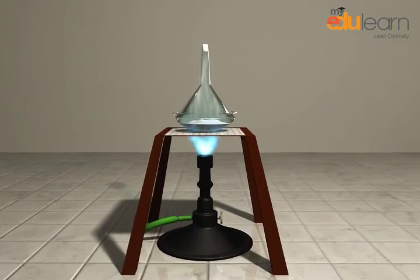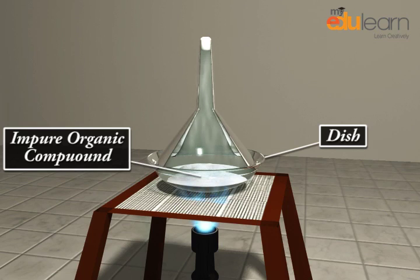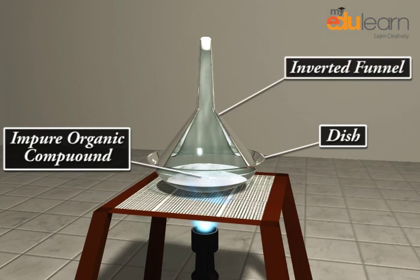The impure organic compound is heated in a dish covered with perforated asbestos sheet over which an inverted funnel is placed. The stem of the funnel is filled with cotton.